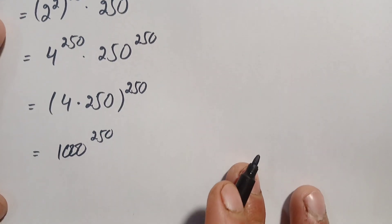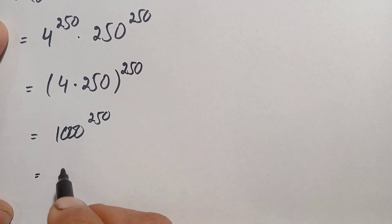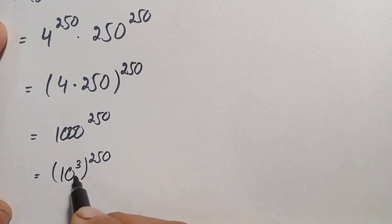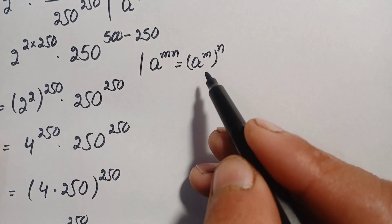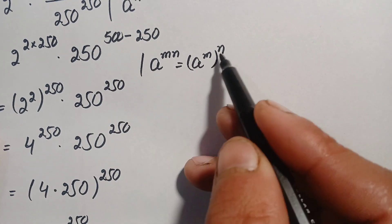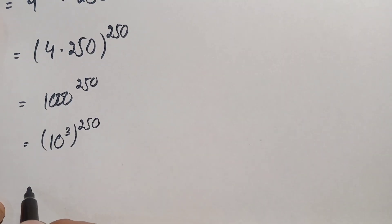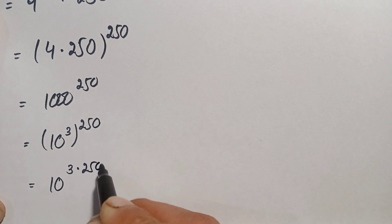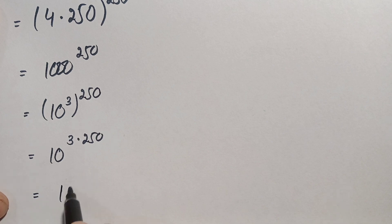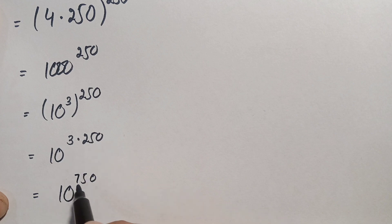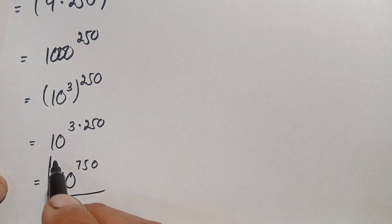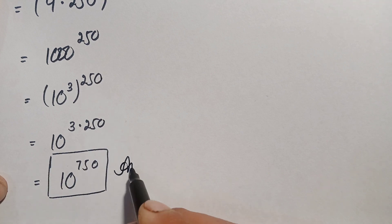We convert 1000 to its exponential form: 1000 equals 10 cubed, so this becomes (10 cubed) raised to power 250. Multiplying the powers: 3 times 250 equals 750. So the final answer using Method 1 is 10 raised to power 750.